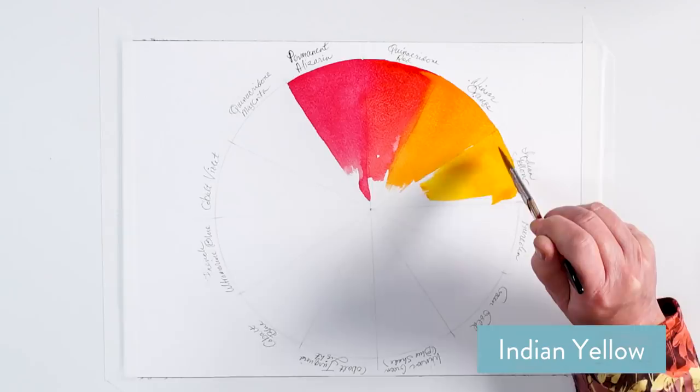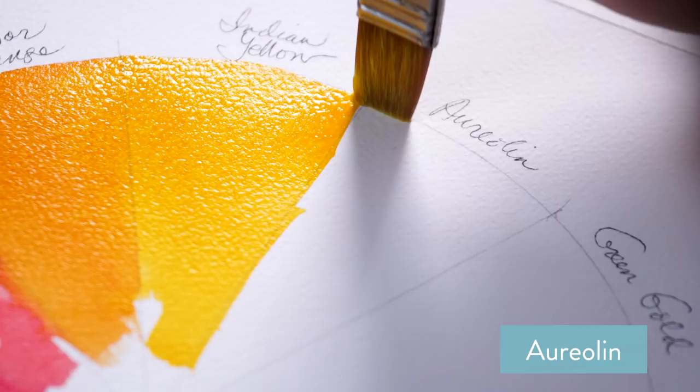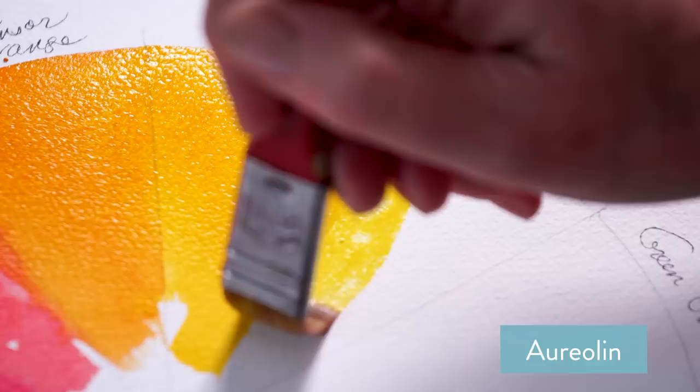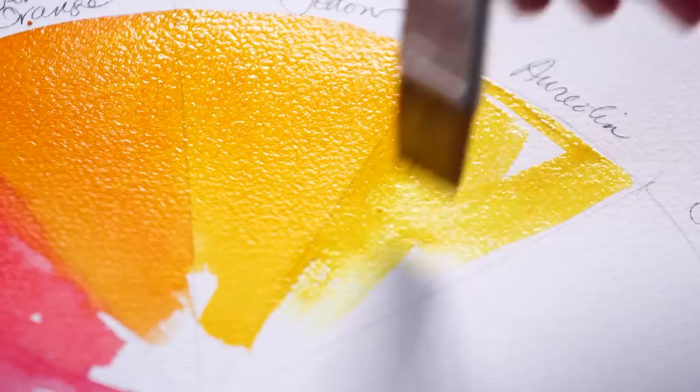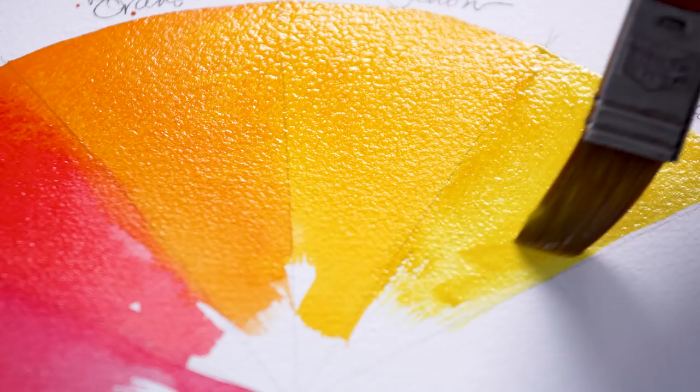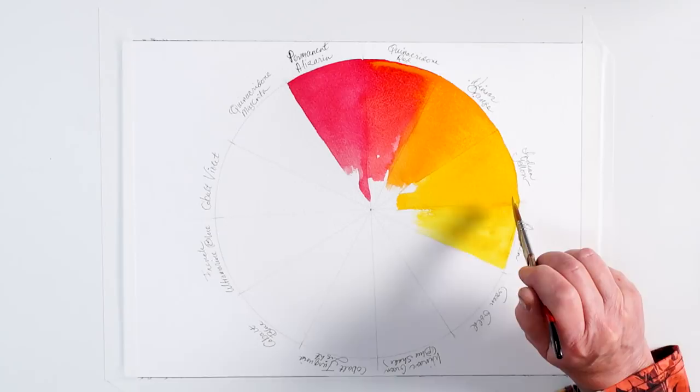Next is our primary yellow, Aureolin, again kind of an older watercolor pigment and a very unusual cool yellow. There are lots of yellows on the market, but this one—look at how beautiful and natural that yellow is. For the cool yellows, it's hard to find something that beautiful. A lot of times they have a greenish or goldish tint to them.